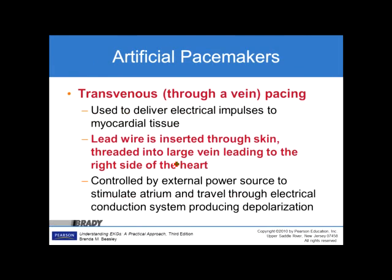Transvenous pacing is through a vein, used to deliver electrical impulses to myocardial tissue. A lead wire is inserted through the skin and threaded into a large vein leading to the right side of the heart. It is controlled by an external power source to stimulate the atrium and travel through the electrical conduction system, producing depolarization. With transvenous pacing, the lead is directly in the tissue of the heart, requires less milliamps, and does not require the large amounts of energy needed for transcutaneous pacing.